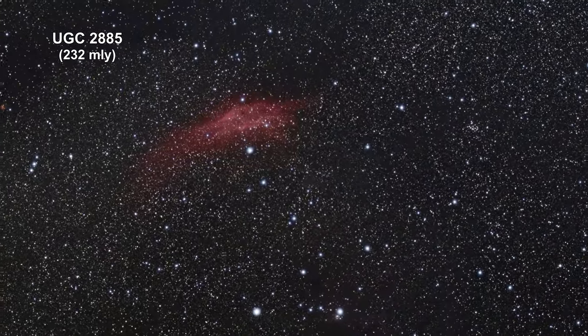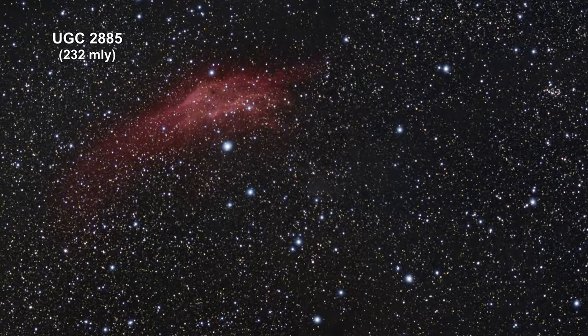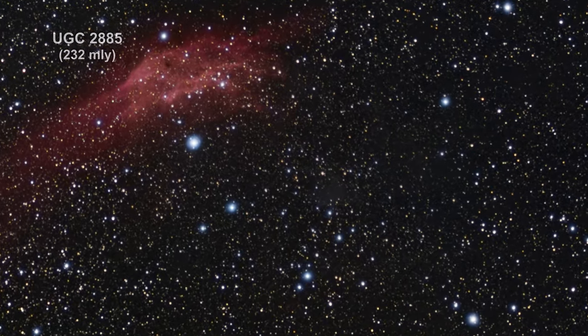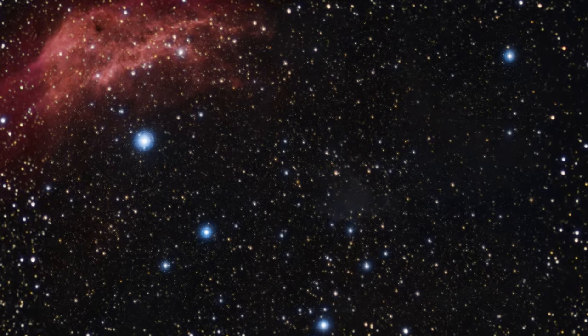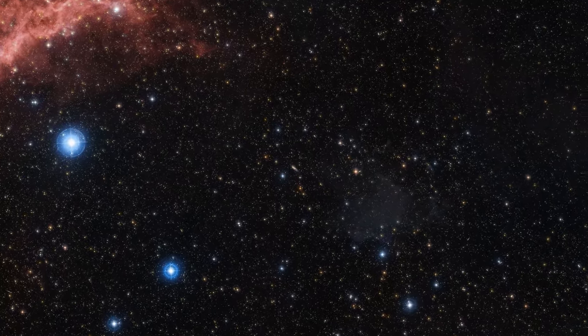This Hubble Space Telescope photograph showcases the majestic spiral galaxy UGC 2885, located 232 million light years away.